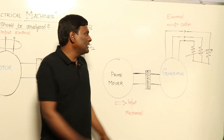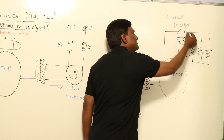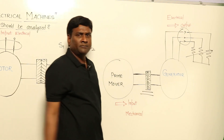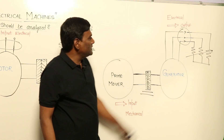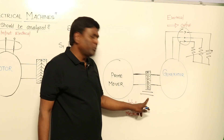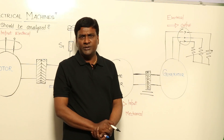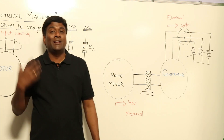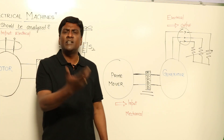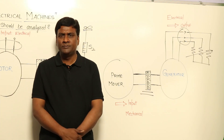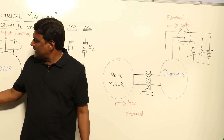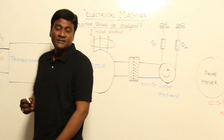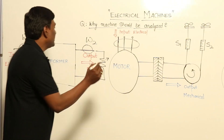For a generator, connect wattmeters on the output side and calculate the mechanical form of input power, so output power divided by input power gives efficiency. The method of directly calculating performance this way is called the direct loading test.